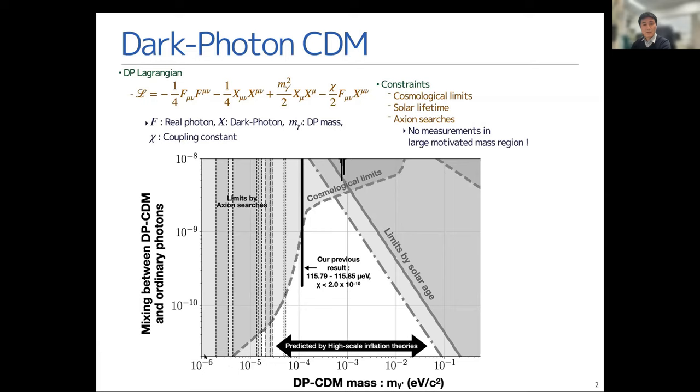In this plot, the horizontal axis is for dark photon mass, and the vertical axis for the mixing parameter chi. We have some strong limits from, for example, the cosmological predictions measurements and the solar lifetime measurement.